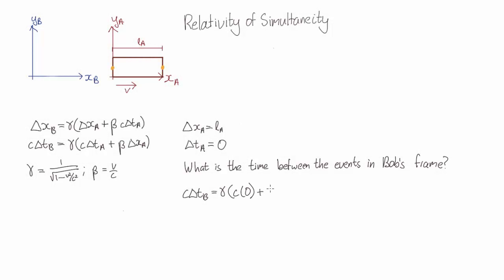So we just stick these values into the Lorentz transformations, and we find the difference in time in Bob's reference frame is v over c squared gamma LA.